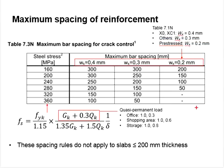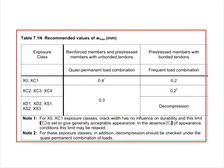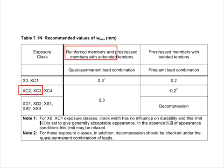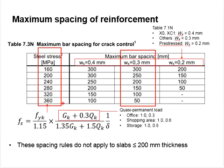This is based on Table 7.1N from the Eurocode. Here you can see the exposure class categories, and in most cases we are using XC2 and XC3 for reinforced concrete members, so we can always choose to use a crack width of 0.3mm. So we are looking at this column and this column in the table.